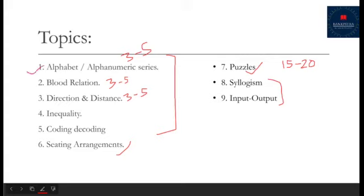So now what happens is if there are Alphanumeric series or Blood Relations questions, then you can see Inequality or Direction and Distance, then you can see other topics. So the exam varies. Now I will mention these topics.